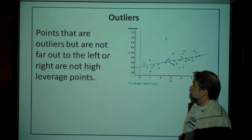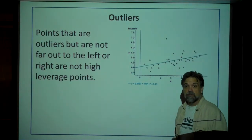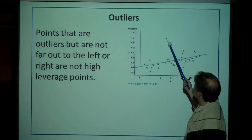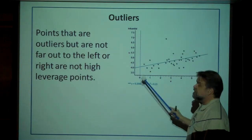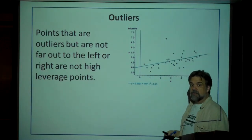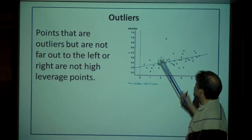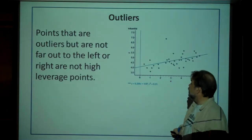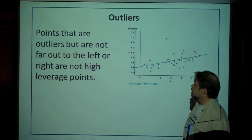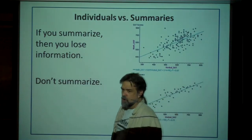Points that are outliers but not far out to the left or right are not considered high leverage points — like our Mercedes or BMW from earlier. If you were to remove such a point, it wouldn't change the slope of the line very much. What it would change is r-squared, which would definitely be higher if removed, because a lot of the spread goes away and the points are much closer to the line.